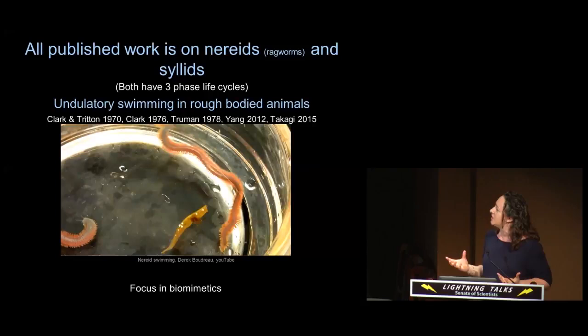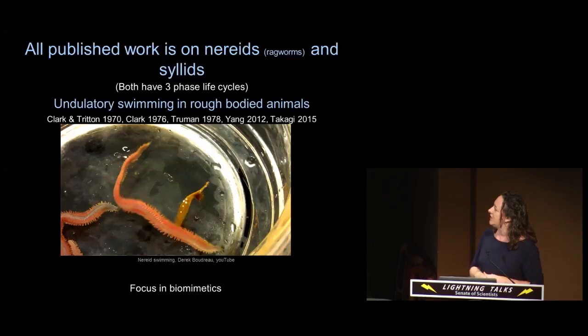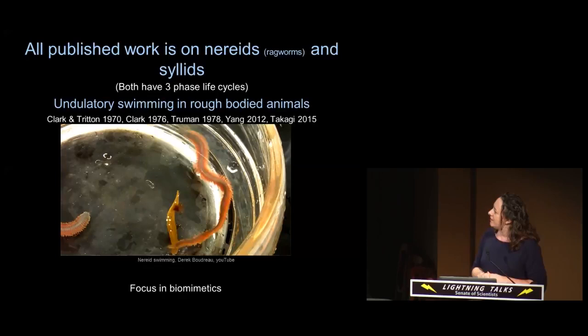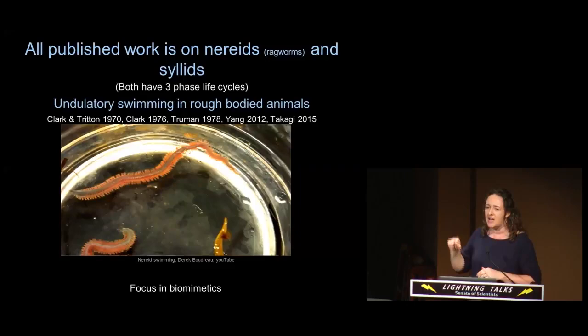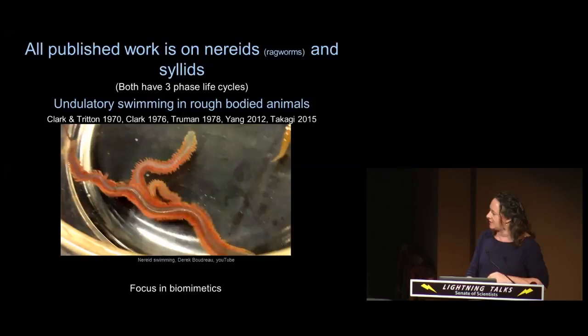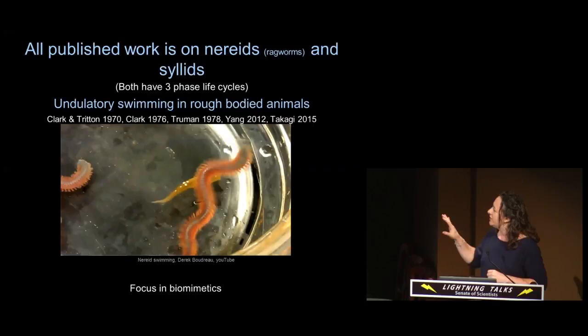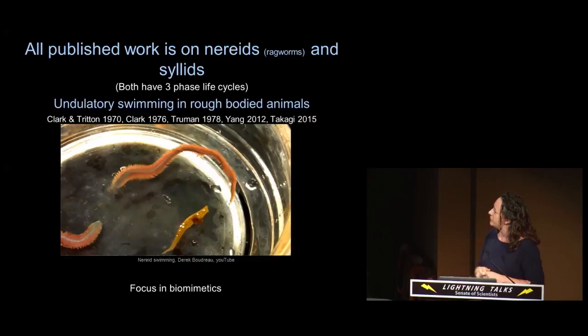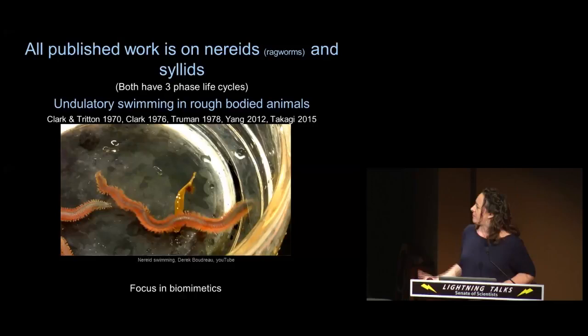To get into this project, I went back into the literature to find out what we know about polychaete swimming in general. What I found is that we know actually quite a bit. There's been some really nice work on polychaete swimming, but it's all been done on two different families — the nereids and the psyllids — and the great thing about those two families is that they have this three-phase life cycle. Polychaetes are always described as doing undulatory swimming: the body waves back and forth, the wave is generated from the back of the body and moves towards the head.